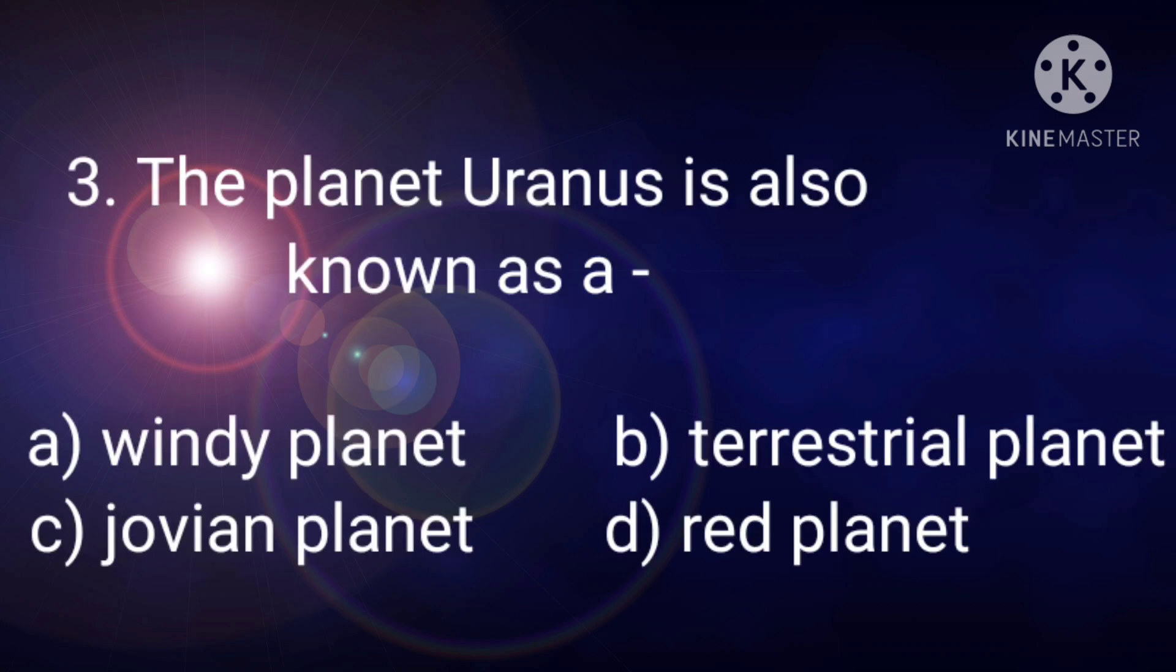Next statement is, the planet Uranus is also known as a, options are windy planet, terrestrial planet, Jovian planet, red planet. Option C, Jovian planet is the correct one.